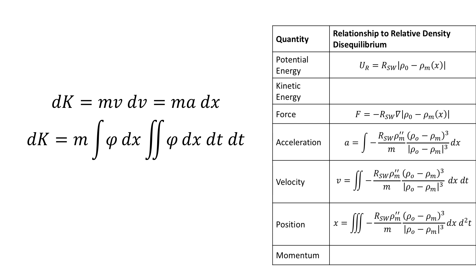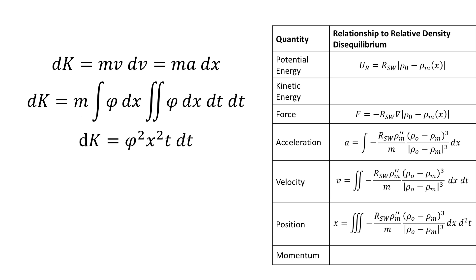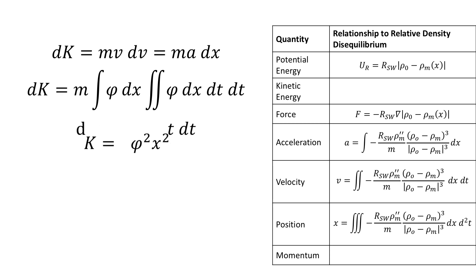And if we let the constants of integration equal to zero, then we get that dk is equal to φ squared x squared t dt, and we integrate to get a kinetic energy of an object once it's fallen down this potential gradient, and this is K is equal to m over two φ squared x squared t squared, and a quick check of the dimensions gives kilograms meter squared per second squared, which is a joule, which is fantastic.